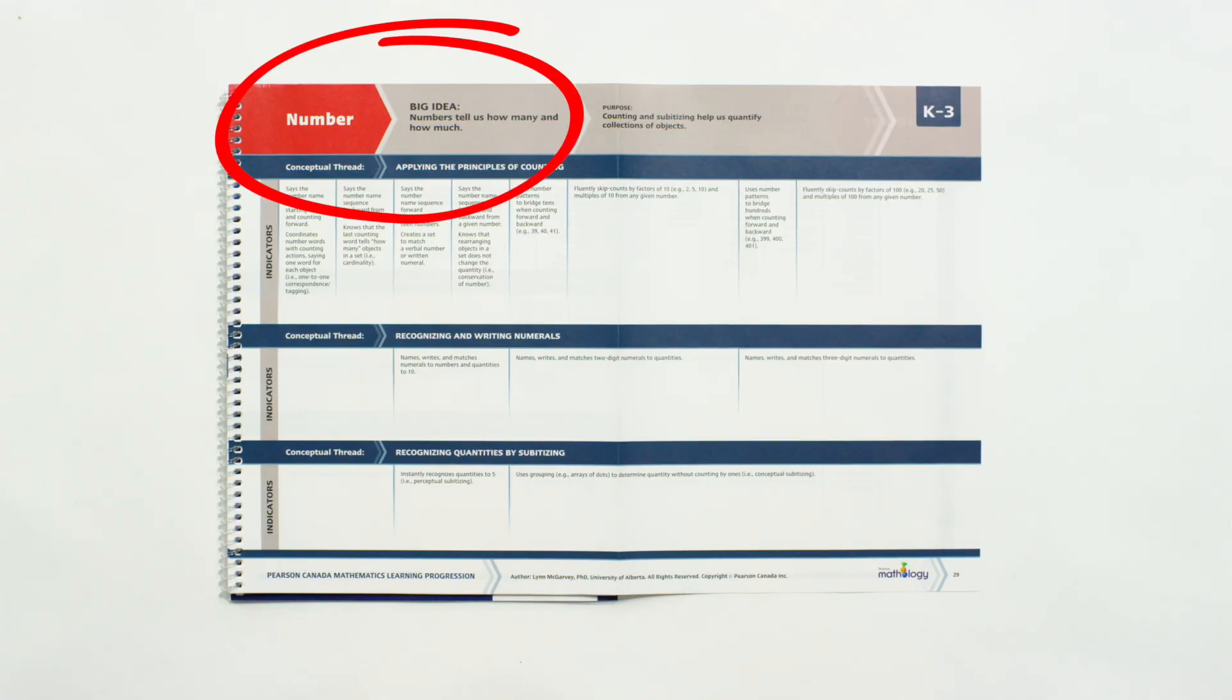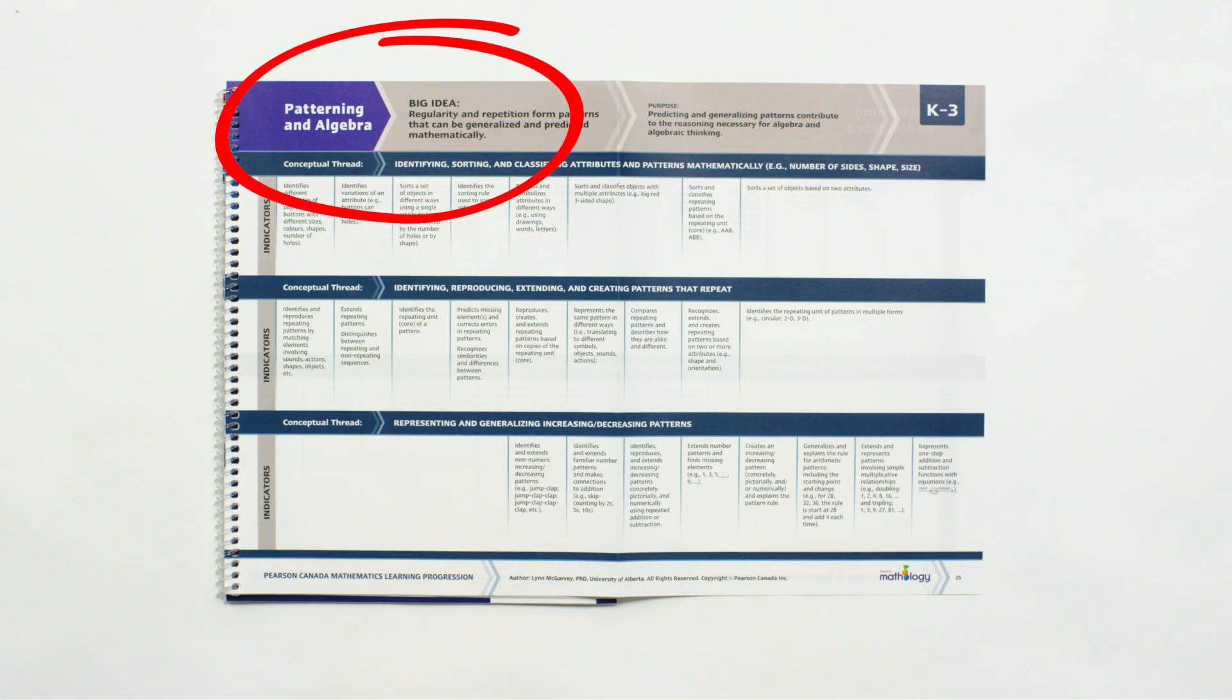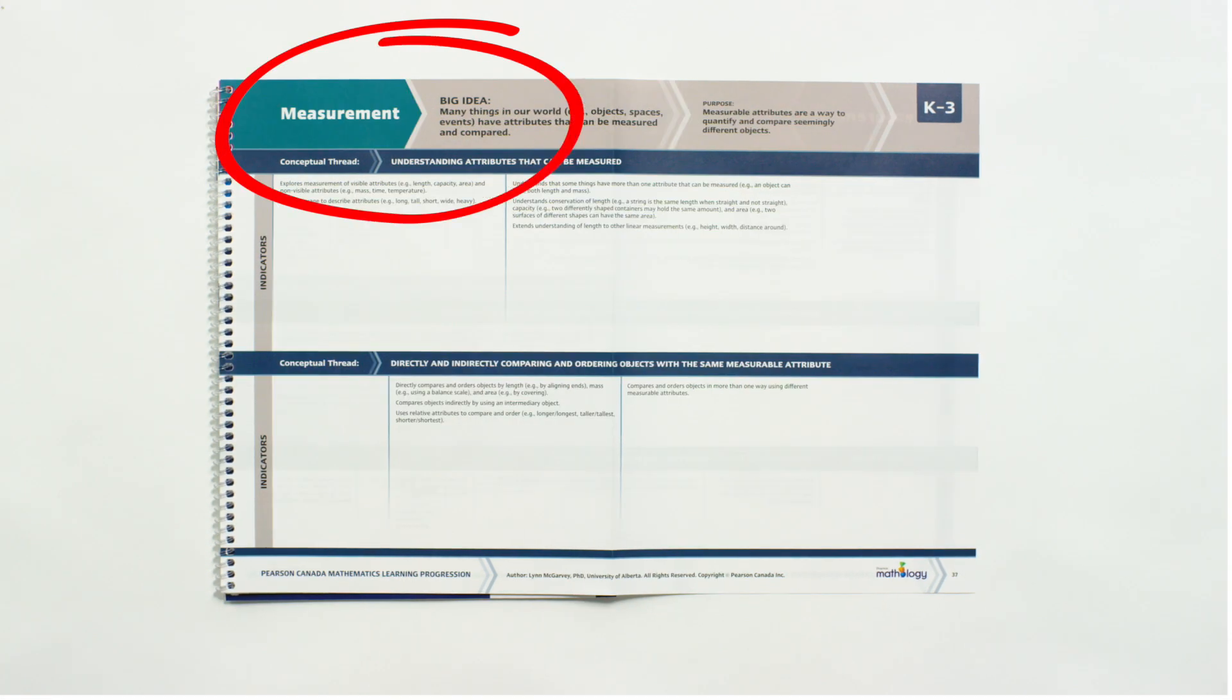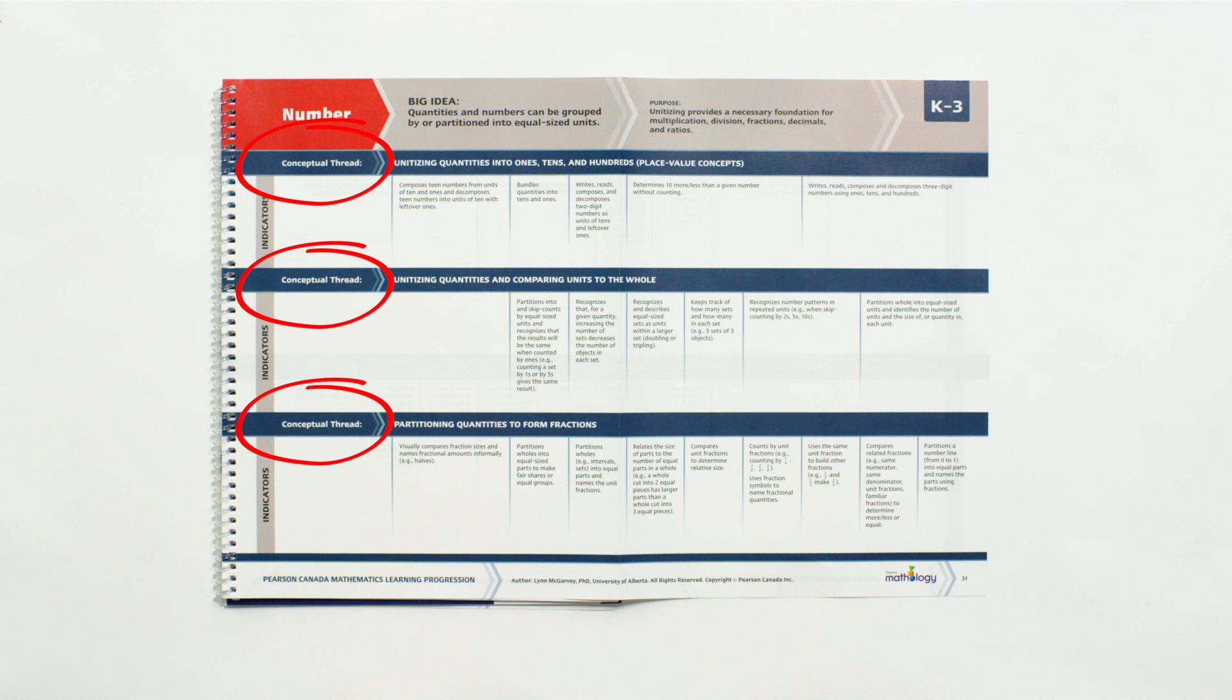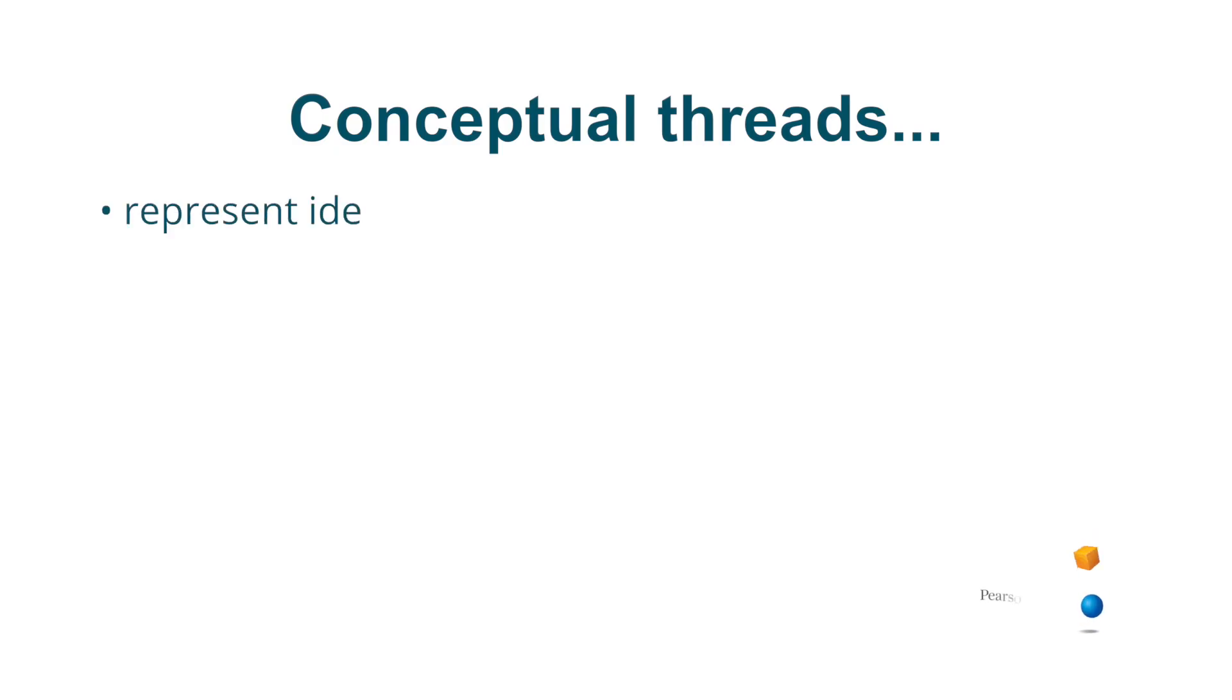The progression has 13 big ideas, with five of these in the number strand, two for patterning and algebra, two for measurement, three for geometry, and one for data management and probability. Conceptual threads provide the next layer of organization. These threads fall under the big ideas and may cross into other strands. They represent the network of ideas that span the early years.